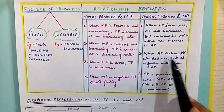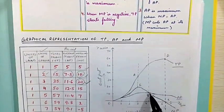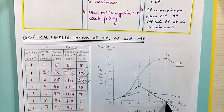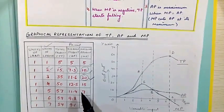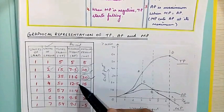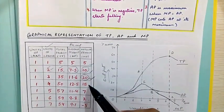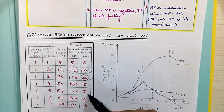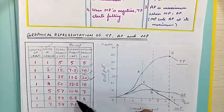Similarly, when average product declines, MP also declines but at a faster rate. When average product falls, marginal product also falls, but the fall in marginal product is more than the fall in average product. Here, average product has started falling from 12.5 to 11.4, and marginal product is falling from 15 to 7 — and then from 7 to 2, while average product falls only from 11.4 to 9.8.